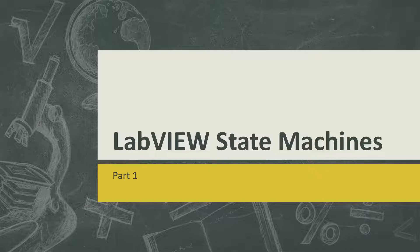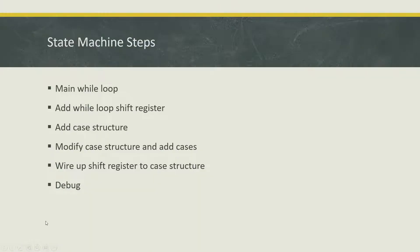I will get into more sophisticated variations in future videos. Here's the list of things you will need in order to make a state machine. The first thing you'll need is to create a while loop, add a while loop shift register, add a case structure, modify the case structure and add cases, wire up the shift register to the case structure, and finally debug.